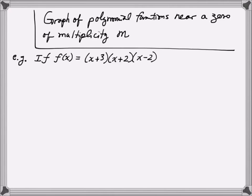Let's define what we mean by multiplicity. For example, if the polynomial function f(x) equals (x + 3)(x + 2)(x - 2), then each of those three is called a factor of the polynomial. Since each factor appears exactly once, we say that the zeros x = -3, x = -2, and x = 2 each have multiplicity 1.